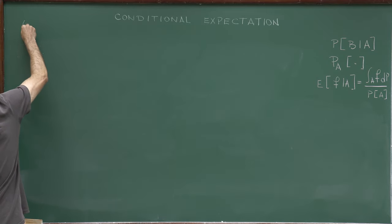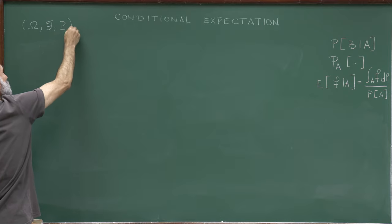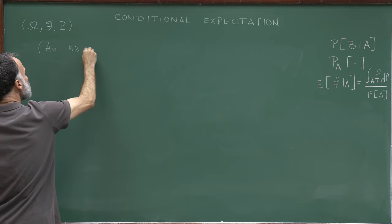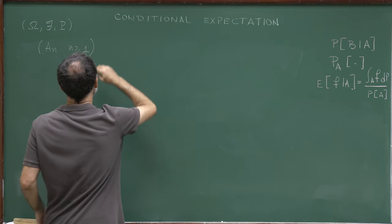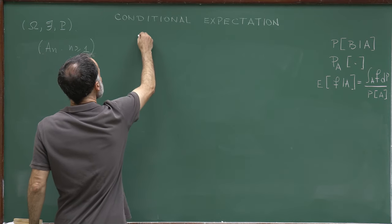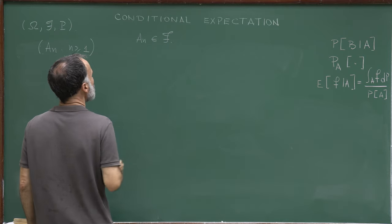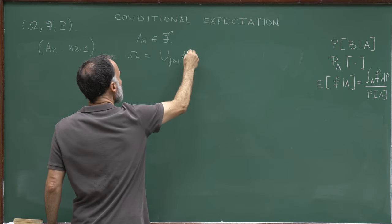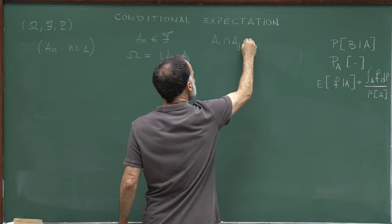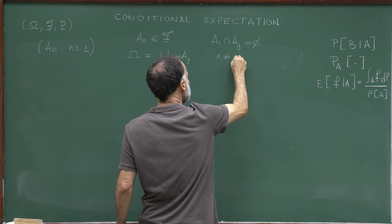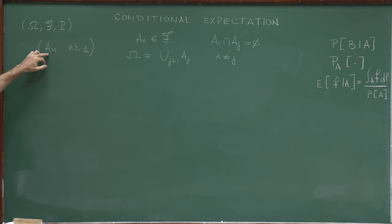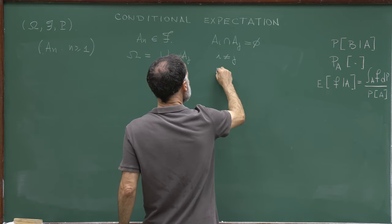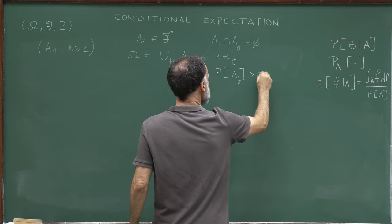Now I will assume I have a countable partition of omega: a countable collection of sets A_n, each measurable, forming a partition of omega. This means omega = ∪_j A_j, and A_i ∩ A_j = ∅ for i ≠ j. I also require that P(A_j) > 0 for all j, so that I can take conditional probabilities with respect to these sets.